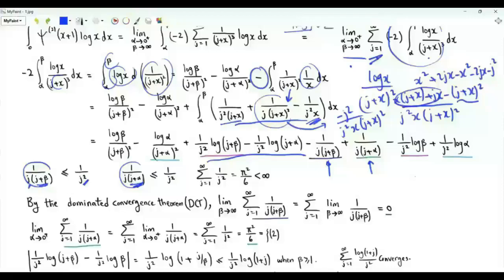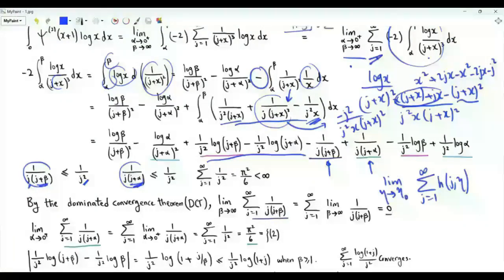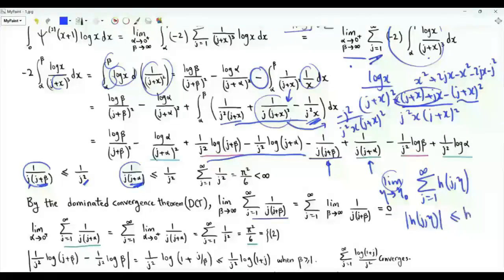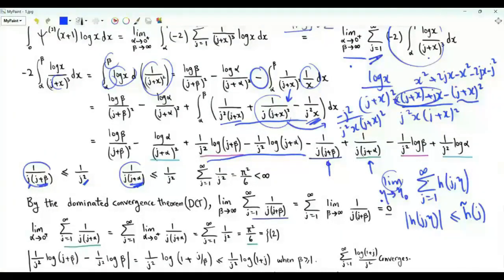This means we can apply the dominated convergence theorem for these two terms. A version of the dominated convergence theorem states: for a summation over positive integer j of h(j, eta), a sufficient condition justifying swapping the order of limit and infinite summation is that the magnitude of h(j, eta) is upper bounded by a function h-tilde depending only on j, not on the variable with respect to which we take the limit, and that the sum of the upper bound is finite. This is exactly our situation.